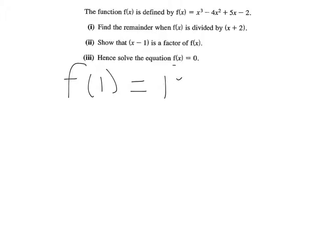So if you put f of one in, you get one cubed, you get minus four lots of one, which is minus four. You add five, because five lots of one is five, take two, you get zero.